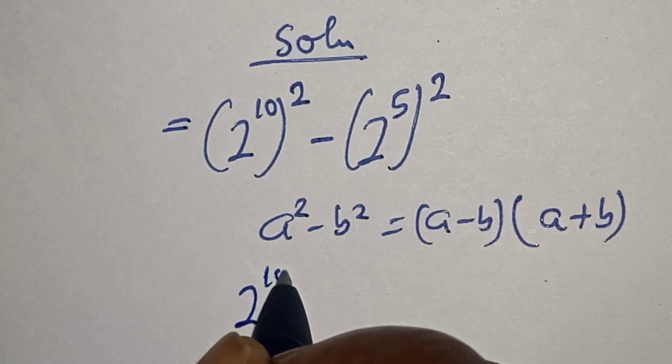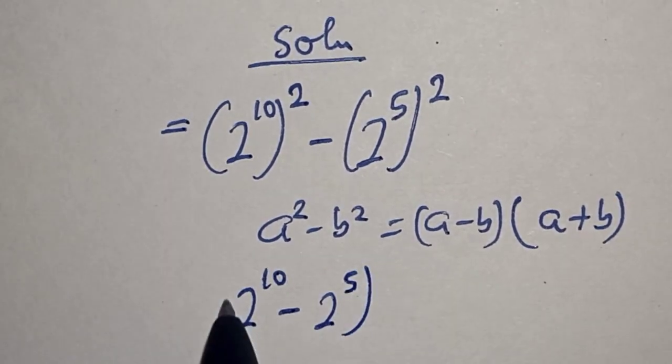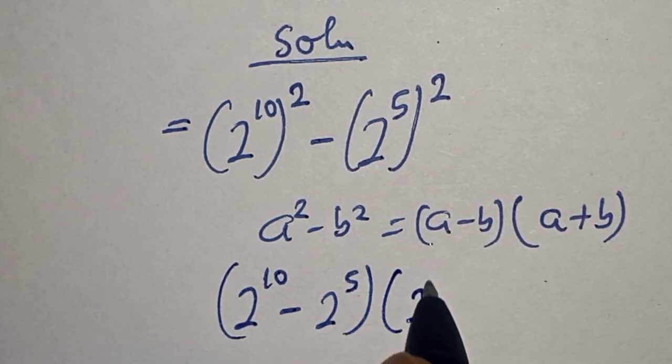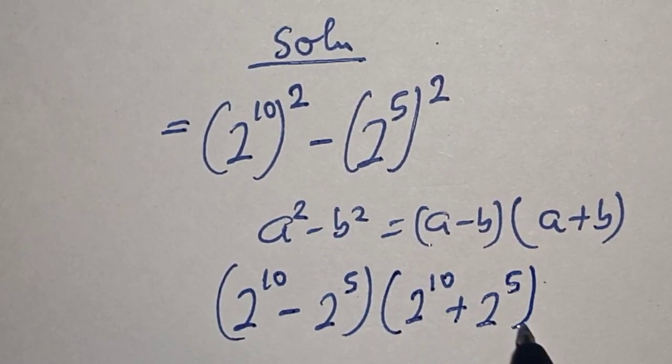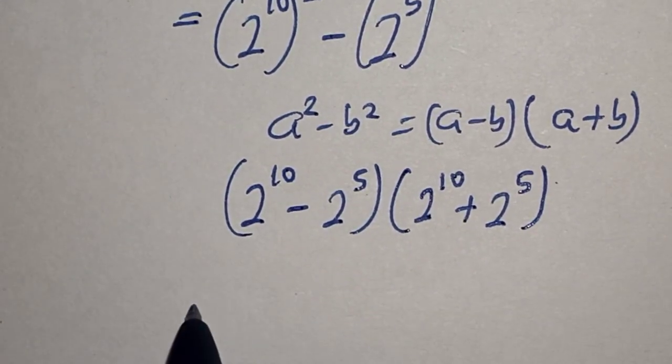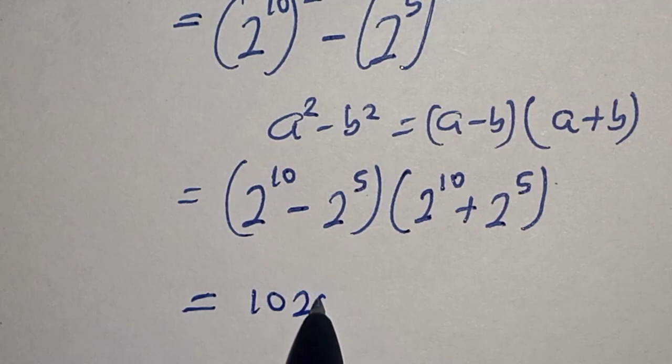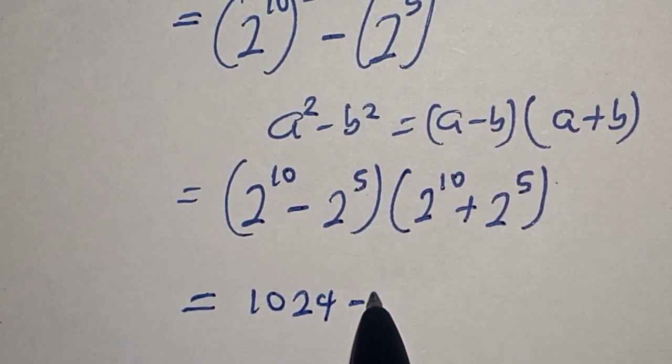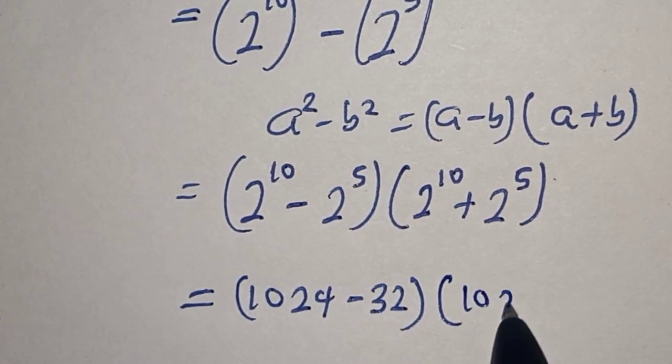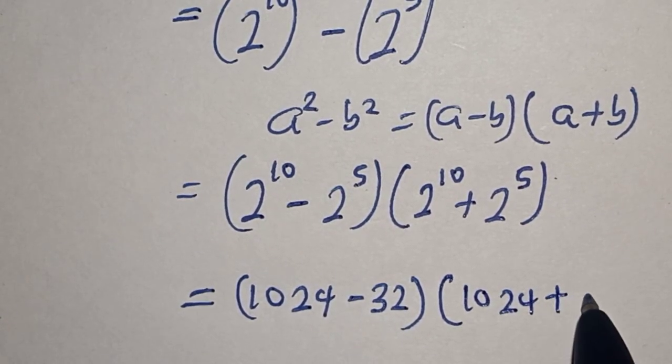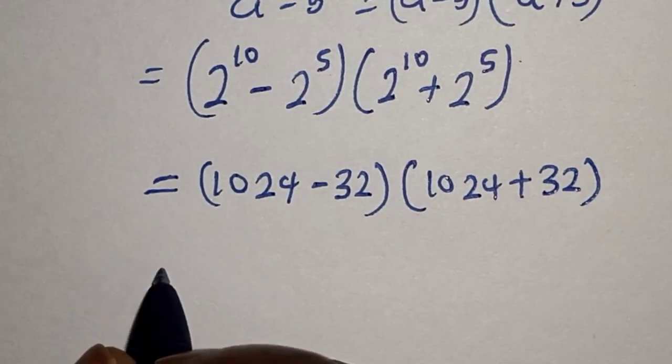This gives us 2 raised to power 10 minus 2 raised to power 5, multiplied by 2 raised to power 10 plus 2 raised to power 5. This equals 1024 minus 32, multiplied by 1024 plus 32.